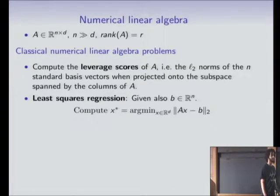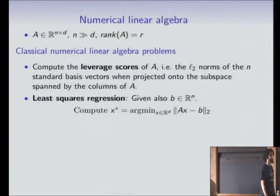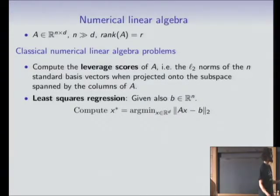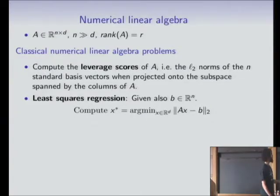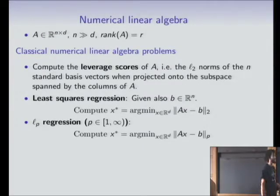Least squares regression is a commonly studied problem. You have an over-determined system of linear equations and you want to find the best possible solution — minimizing the sum of squared distances to the line you find, for example. And instead of the L2 norm, you can also measure under Lp, for example LP regression.